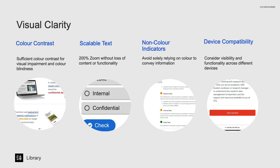For example, in the section explaining the university's classification system for data sensitivity, we had initially used font colour to denote sensitivity levels. We changed this to include a coloured dot beside the headings to align with the sensitivity information while keeping the text black. We also considered content visibility and functionality across different devices and orientations, including portrait mode, to enhance accessibility for users on various devices.